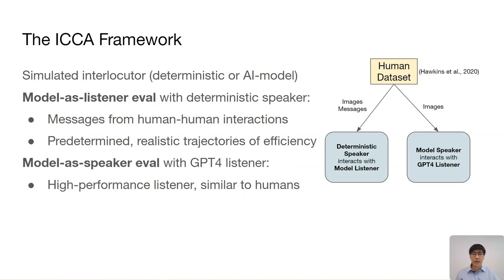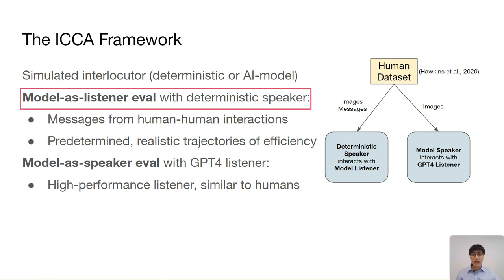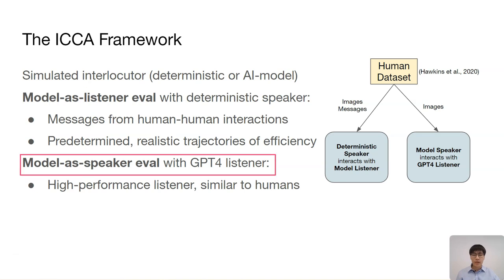Another key component of ICA is the simulated interlocutor, which allows us to evaluate generic conversational models without letting them interact with humans. To evaluate a model as the listener, we use a deterministic speaker, which for each image uses a predetermined sequence of messages from an existing human-human interaction dataset. These messages show a realistic trajectory of shortening. To evaluate a model as the speaker, we use GPT-4 as the listener, because our experiments show that GPT-4 has high performance, similar to humans when acting as the listener.